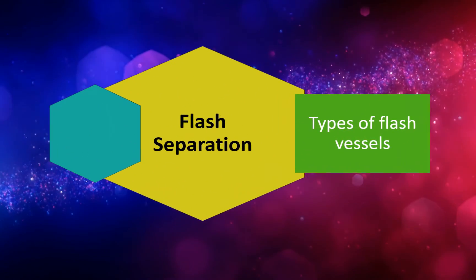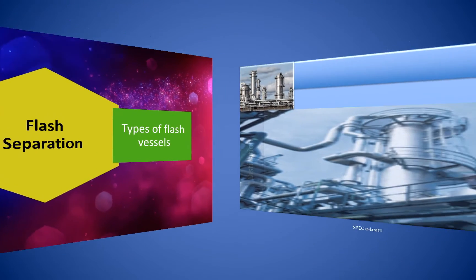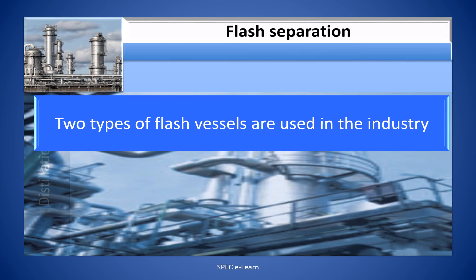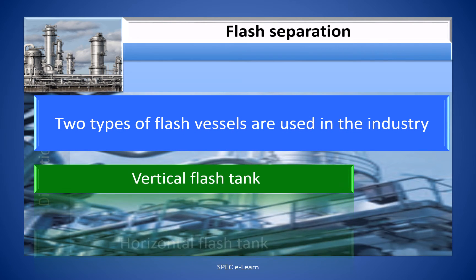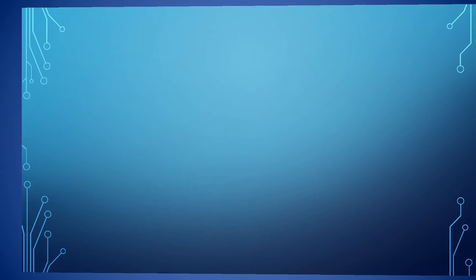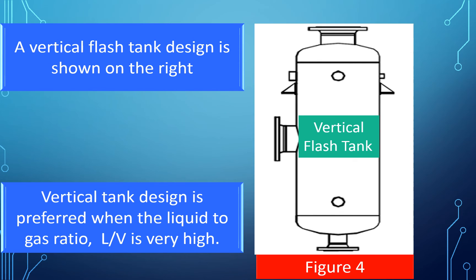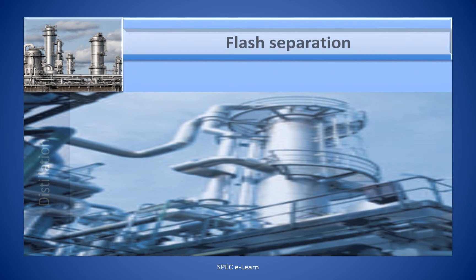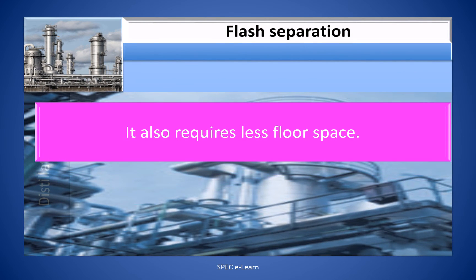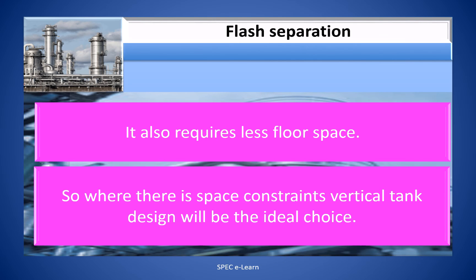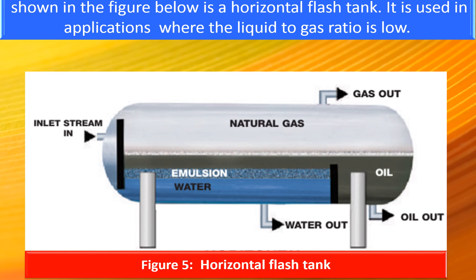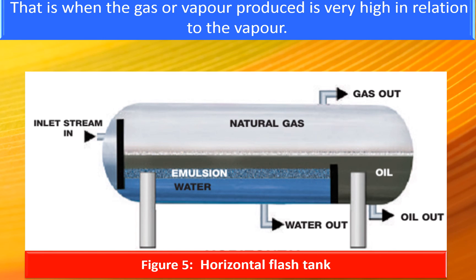Types of flash vessels. Two types of flash vessels are used in industry: vertical flash tanks and horizontal flash tanks. A vertical flash tank design is preferred when the liquid-to-gas ratio (L/V) is very high. It also requires less floor space, making it the ideal choice where there are space constraints. A horizontal flash tank is used in applications where the liquid-to-gas ratio is low — that is, when the gas or vapor produced is very high in relation to the liquid.